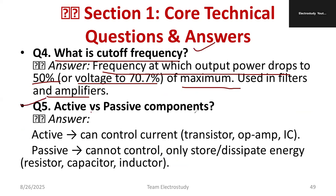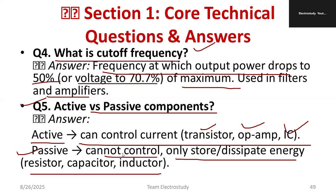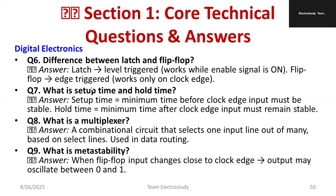What is the difference between active and passive components? Active components can control current flow — for example, transistors, op-amps, and ICs are all active components. Passive components cannot control current; they only store or dissipate energy. Resistors, capacitors, and inductors are examples of passive components.